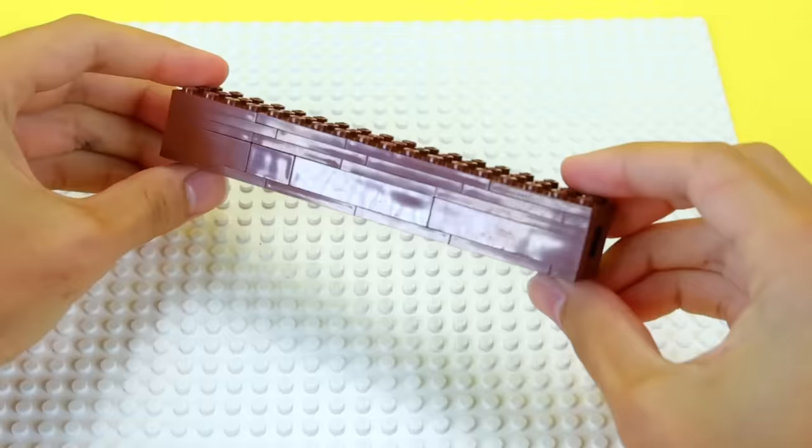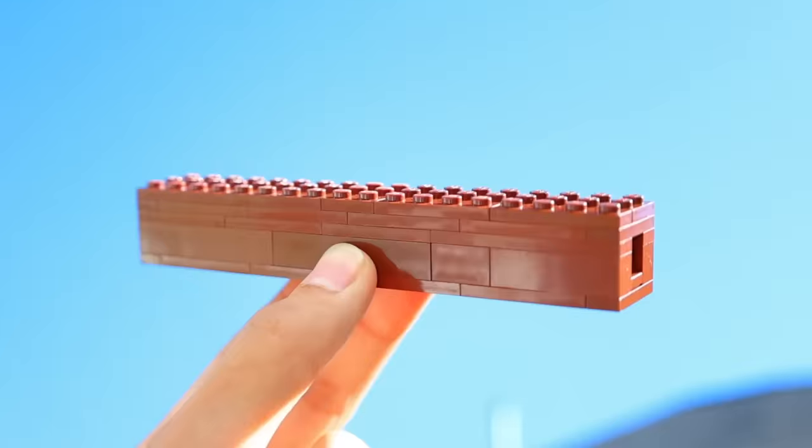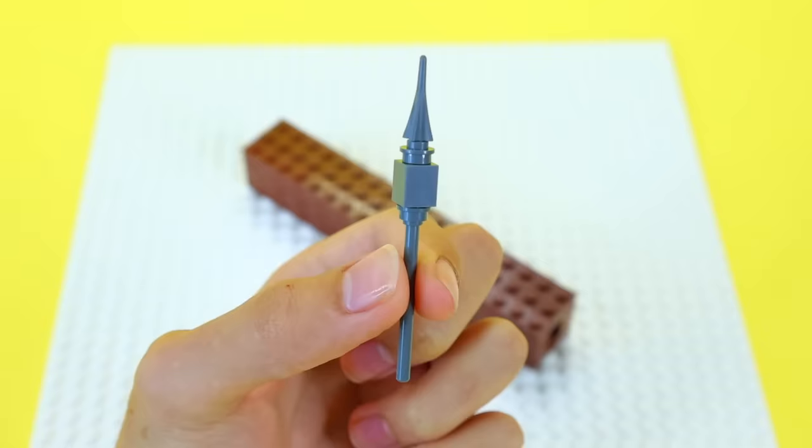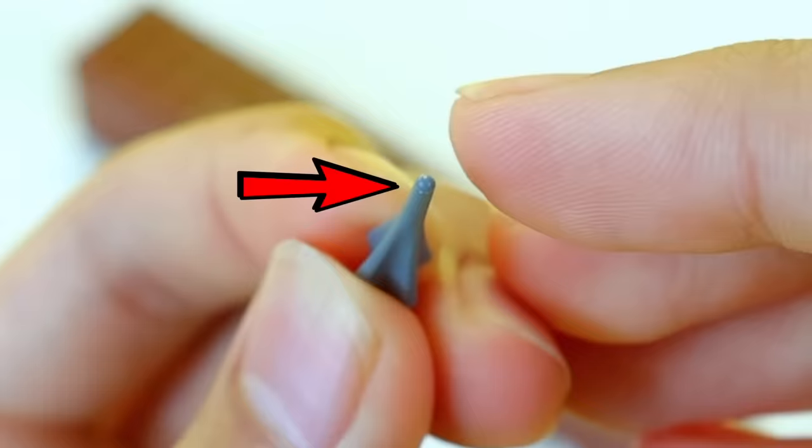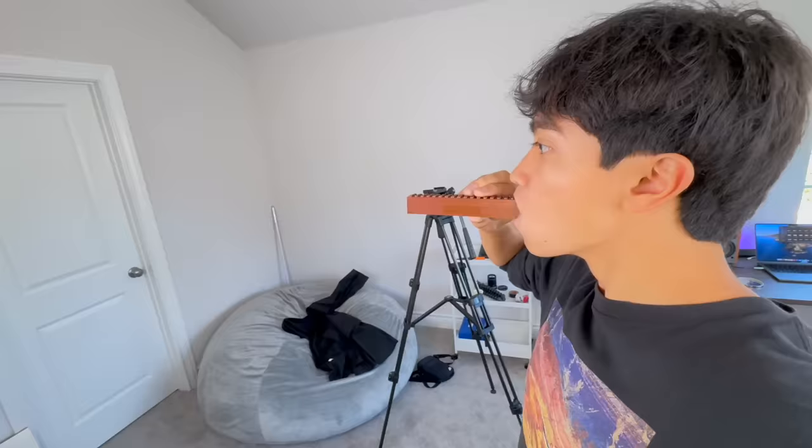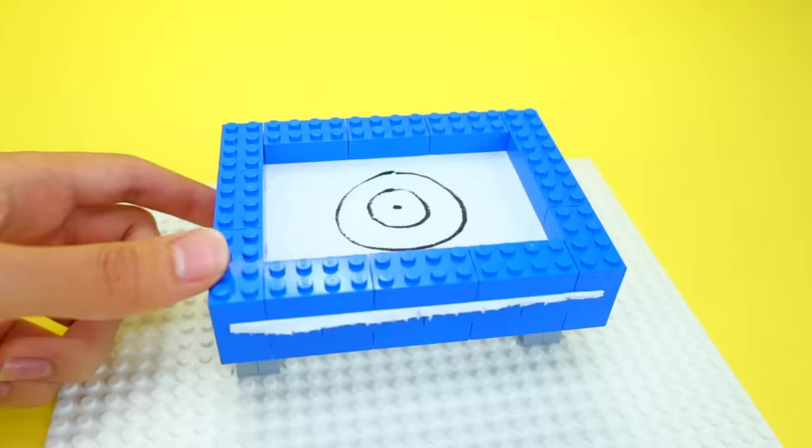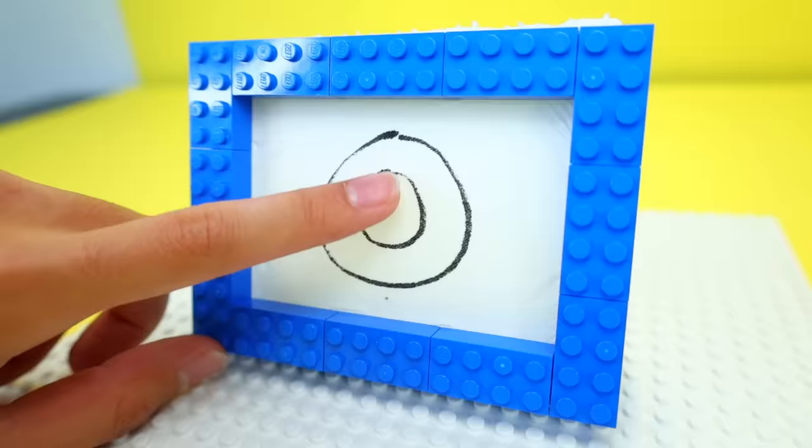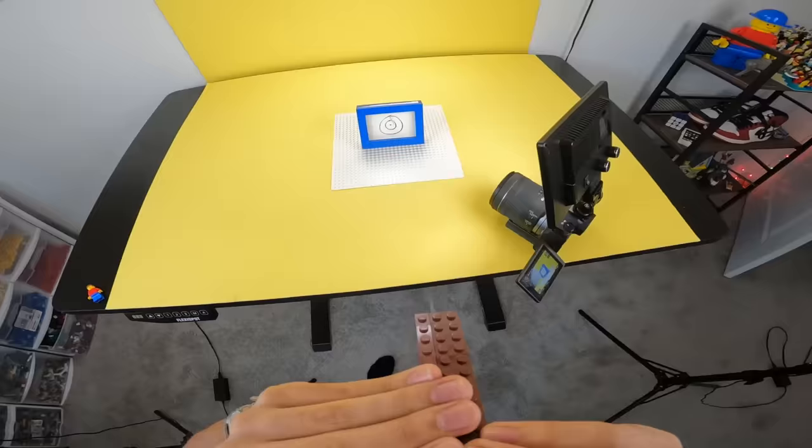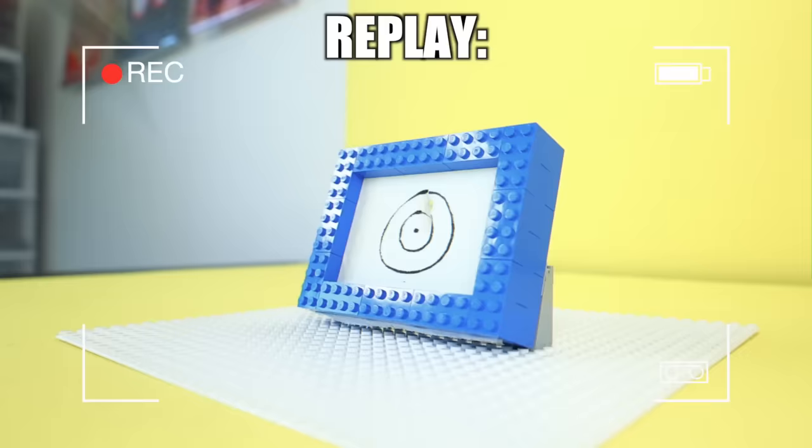This next Lego weapon I built is known as a blowgun, and it's an ancient weapon that was used by indigenous people around the world. They shoot darts, so I built my own in Lego using the sharpest tipped Lego piece I could find. This weapon is very simple. You simply put your mouth on it, and then you blow it. Whoa, that's sick. Let's try out some quick target practice. So here's a piece of toilet paper that I grabbed from my bathroom. Ooh, we put a hole through it. It looks like it's actually pretty effective.